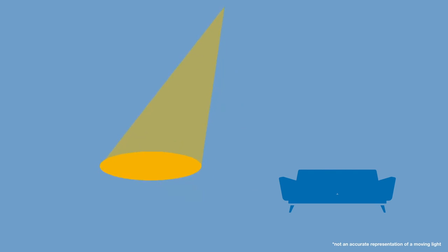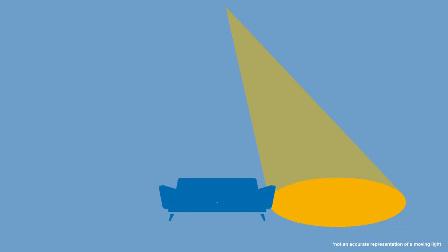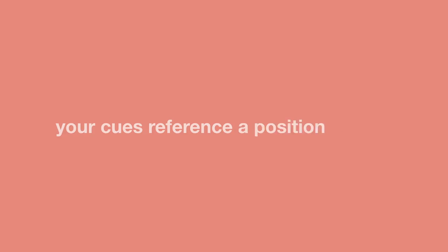I have a moving light which regularly points to a sofa, but the directors decided to move it. Typical. This is fixed super quickly if your cues reference a position palette.